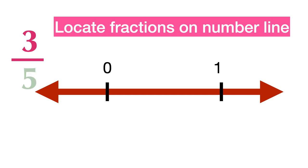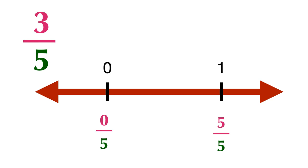First, you need to make the denominator the same. So let's convert 0 and 1 to fractions with a denominator of 5. 0 equals 0 over 5, and 1 equals 5 over 5. Since the denominator is 5, divide the number line into 5 equal parts.